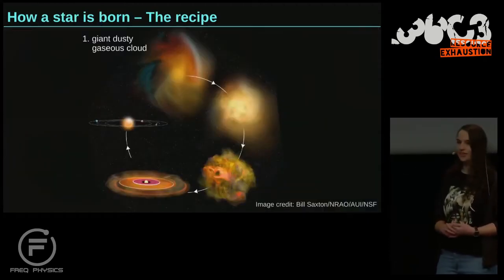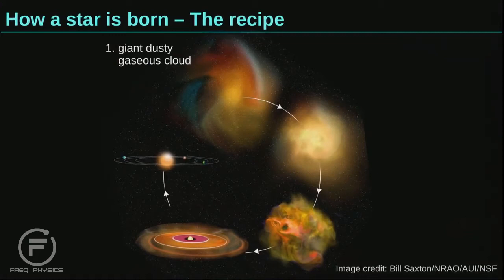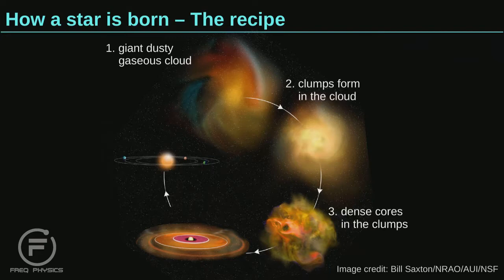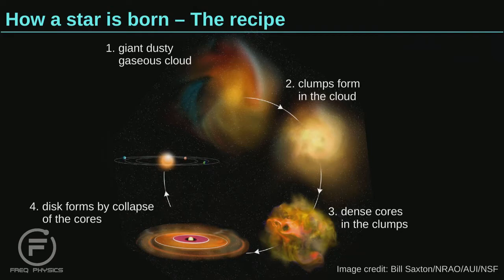Let's look at how a star forms. A star forms from a giant cloud of dust and gas. Everything moves in that cloud, and eventually denser regions occur, getting even denser. These clumps can eventually collapse into one star — they collapse due to their own gravity. In this process, a disk forms, and in this disk, planets can form.